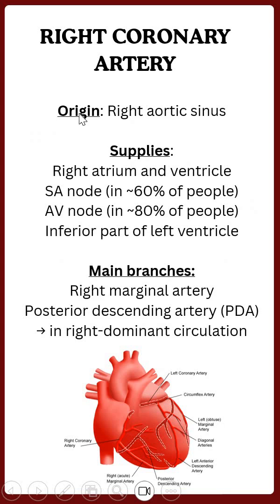Right coronary artery — it arises from the right aortic sinus. It supplies the right atrium and the right ventricle, the SA node, AV node, and the inferior part of the left ventricle. The major branches of the right coronary artery are the right marginal artery and the posterior descending artery in right dominant circulation.